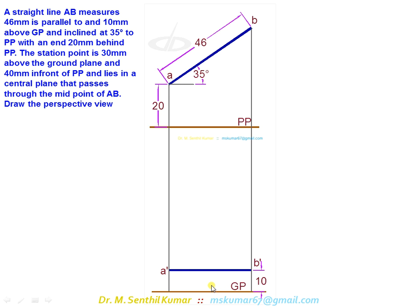So top view and front view of the line or the object is over. Now we move to the station point, the observer eye point. The station point first - the central plane lies in the central plane, passes through the midpoint of AB. So find out midpoint of AB or midpoint of A dash B dash. To that, draw a vertical line. That is the central plane. Central plane is seen as a line both in front view and top view. On it only, the top view S and front view S dash are the station points to be marked.